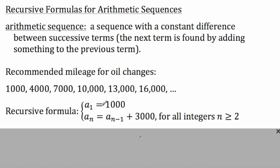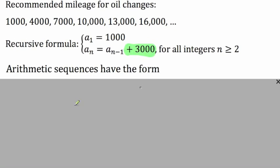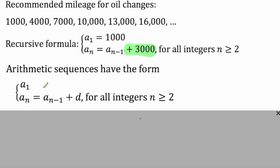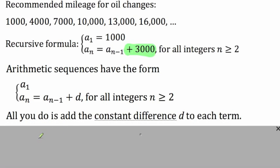We've seen recursive formulas before. What we're looking at now is a specific kind of sequence — one where what we do to find each term is add a given number. This is what tells us it is an arithmetic sequence, because we're adding 3,000. In general, arithmetic sequences have a form that first defines the first term, a sub 1, and then generates the nth term by using the previous term and adding d, some constant difference, each time.